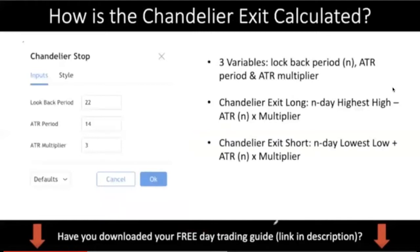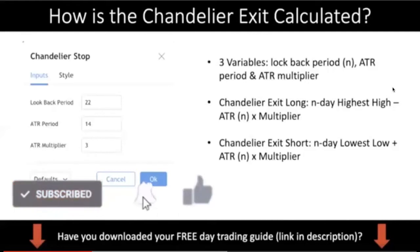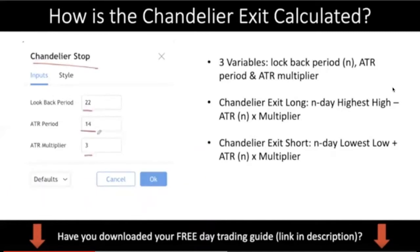Now let's talk about how the channeler exit is calculated. My goal is to help you understand how it works. If you go on to TradingView and add in your chandelier stop indicator, you'll be prompted to put in three inputs: a look-back period, an ATR period, and an ATR multiplier. The look-back period is just asking you how many days' high or low you want in the calculation. So if you put 22, it means you're taking into account the 22-day high for a chandelier exit long — that's N, the look-back period.